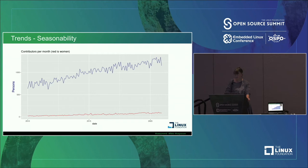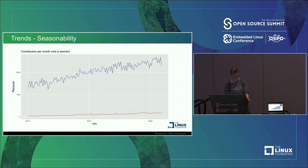The number of contributors also correlates with the increase in commits per year — the two plots are relatively the same. As time passes by, the number of commits keeps growing. The kernel is growing in terms of the number of files, lines of code, contributors, and commits. From the outside, you could assert that the kernel looks like a healthy environment.